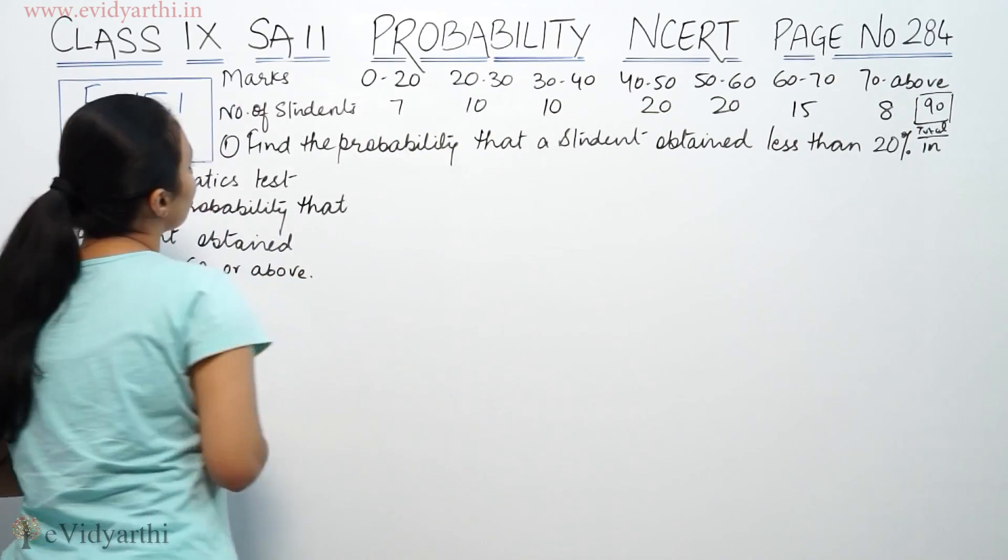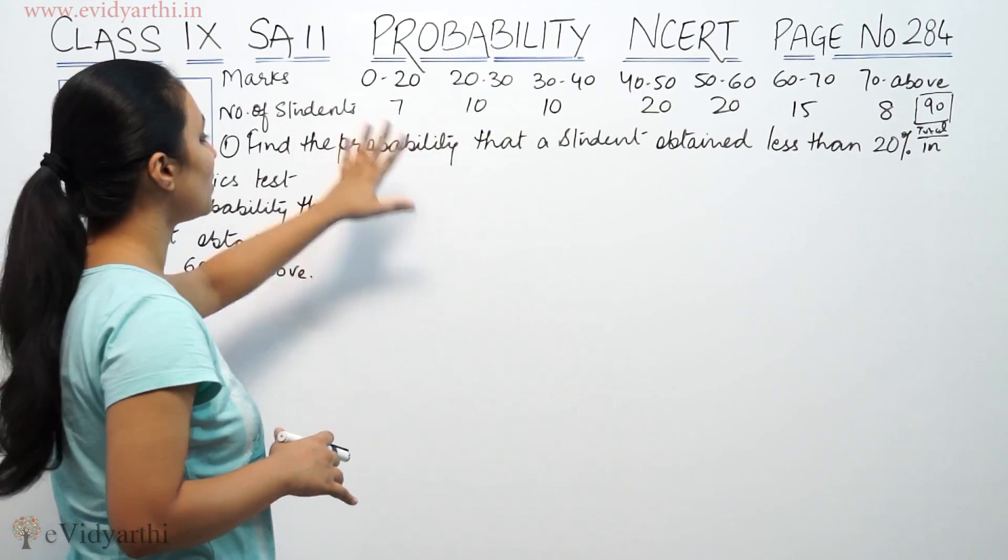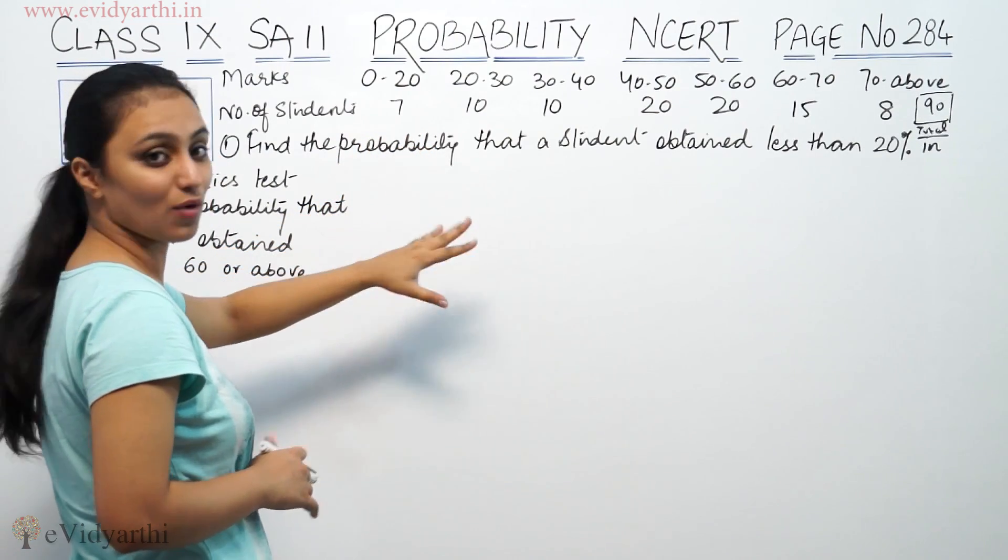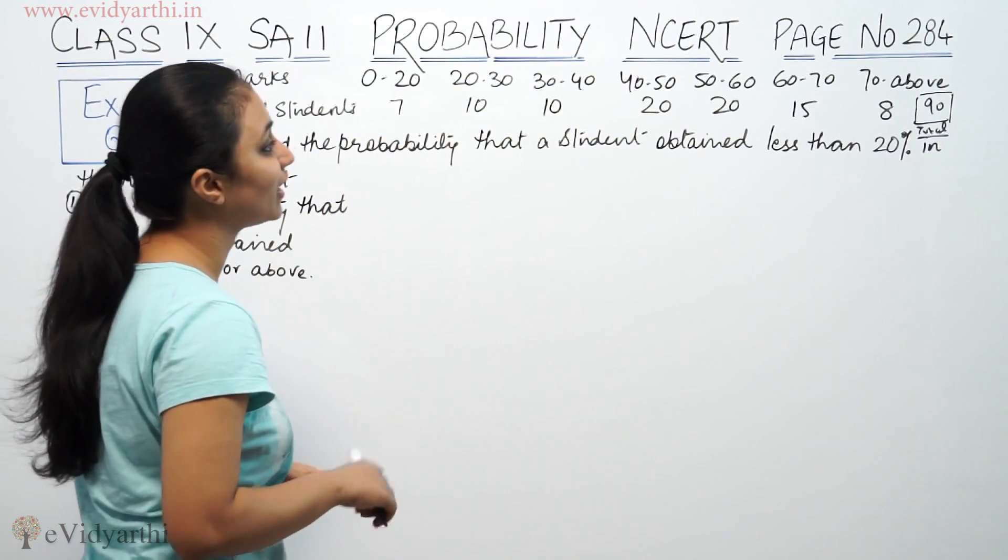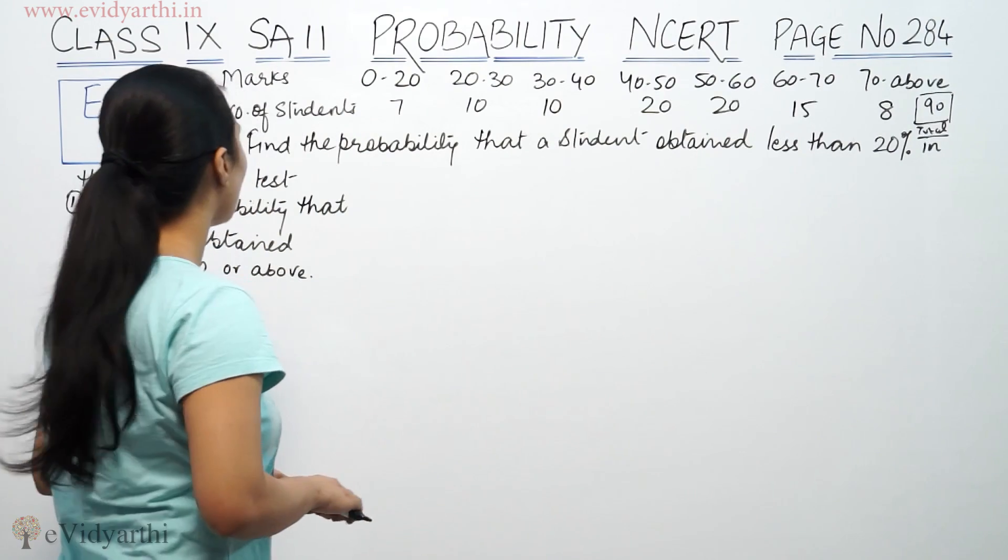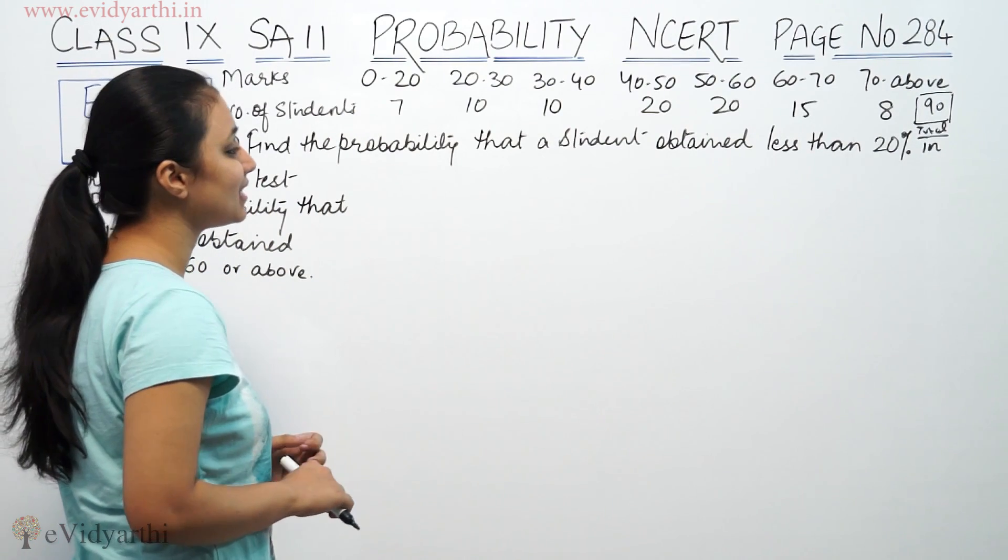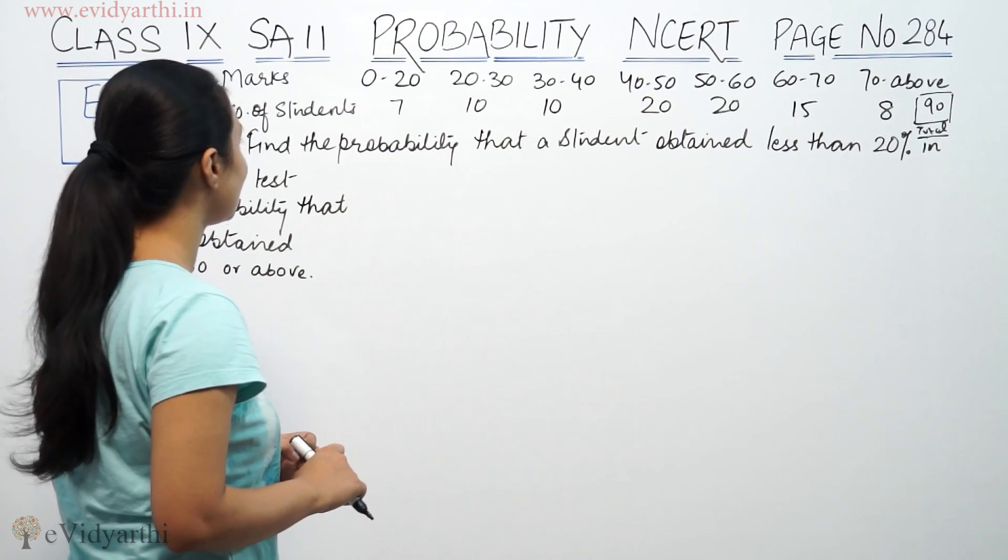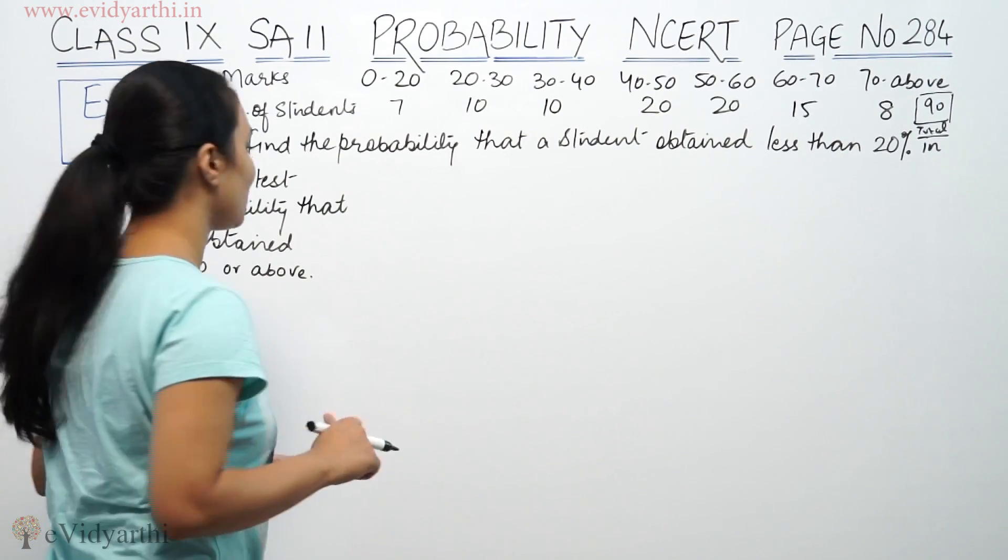It says the marks are given to students between 0-20, 20-30, 30-40 marks percentage given. The number of students are given and the total is 90. It says find the probability that a student is obtaining less than 20% marks in the mathematics test. The students obtaining less than 20% marks.